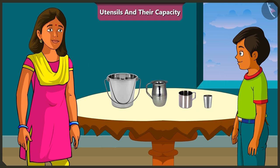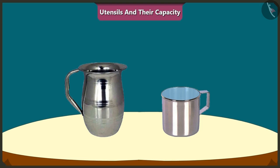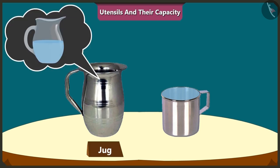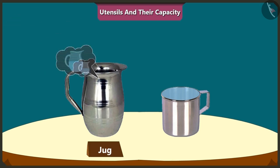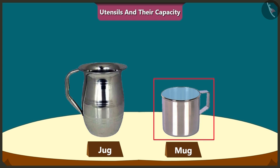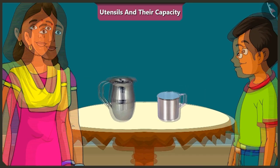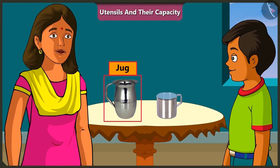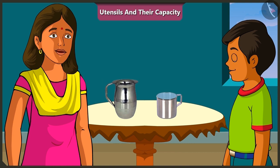Well done, Mishtu. Come on, let me show you something. Look, this jug is half filled with water, and the mug is completely filled. So, which of these two have more water? This mug has more water, because this is completely filled. No, Mishtu. This jug has more water. How? First of all, tell me, what is the capacity of this jug?